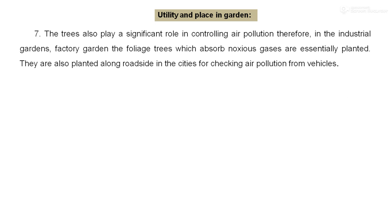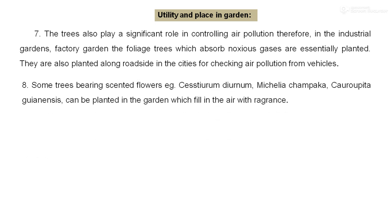Trees also play a significant role in controlling air pollution. Therefore, in an industrial garden or factory garden, foliage trees which absorb noxious gases are essentially planted. They are also planted along the roadside in cities for checking air pollution from vehicles. Some trees bearing scented flowers, like jasmine and cestrum, can be planted in a garden which fills the air with fragrance.